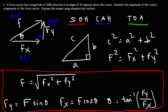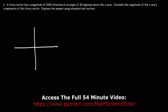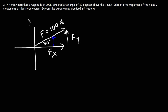Now let's finish this problem. We have a force vector directed at an angle of 30 degrees above the x-axis, with the x-axis and y-axis drawn. The magnitude of this force vector is 100 newtons. Let's break it up into its x and y components, with the angle being 30 degrees. Go ahead and calculate the magnitude of the x and y components of this force vector.